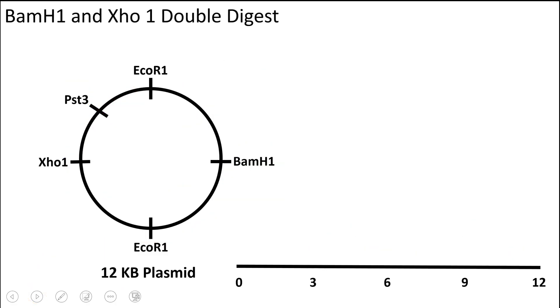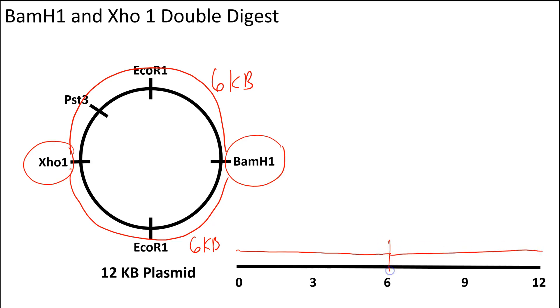Let's consider another example. In this example, we're doing a double digest with BamH1 and XhoI, which are both on opposing sides of this 12 KB plasmid. So here you have your XhoI, here you have your BamH1. Because of this, we're going to generate two fragments of equal size, which is half the plasmid or 6 KB. So this fragment here would be 6 KB. This fragment here would also be 6 KB. 6 plus 6 is 12, so we've accounted for all of our DNA. So there's a fragment and there's a fragment. So you get one fragment here, one fragment here with that. So the math checks out on that one as well.